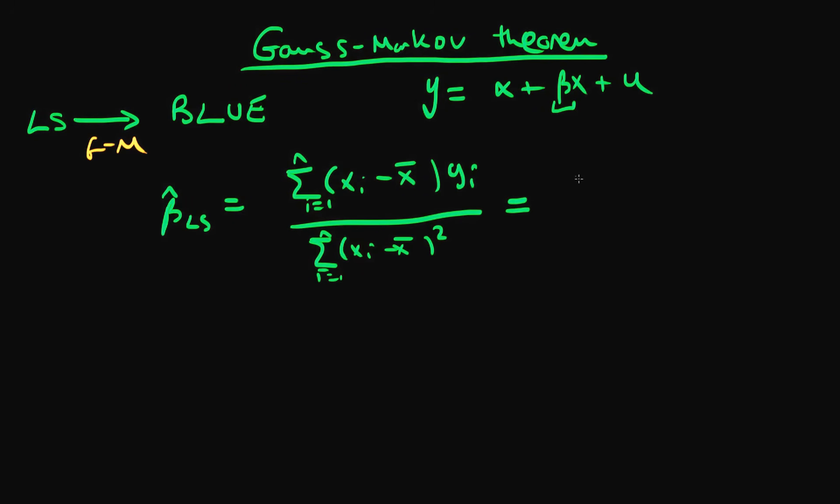And writing this another way actually, we can write this just as the sum from i equals 1 to n of vi times our dependent variable value yi. Written this way it's actually quite easy to see why we think about least squared estimators as being linear.